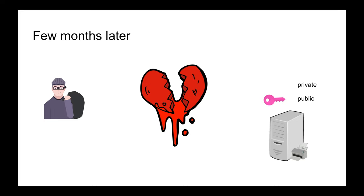The key property is: merging a private key with the public key produces an unbreakable combination that is safe to send over the air unencrypted, because it's extremely difficult to factor. Similarly, merging the other private key with the public key also produces a different unbreakable public combination.